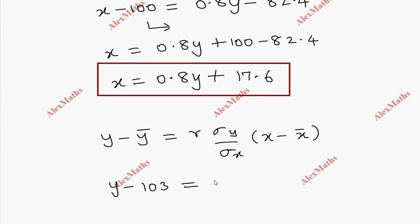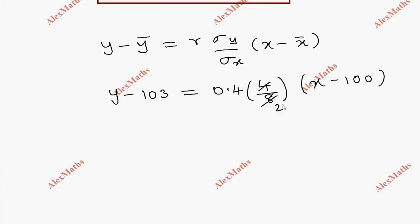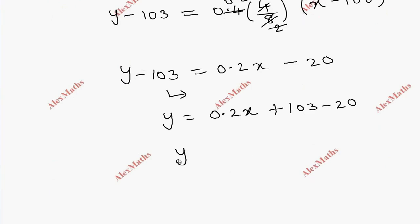0.4 into 4 by 8 times x minus 100. After canceling, we get y minus 103 equal to 0.2x minus 20. So y equal to 0.2x plus 103 minus 20, which is 83.